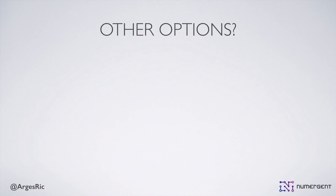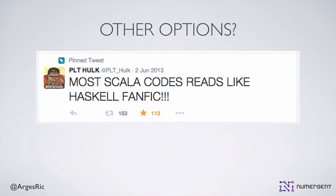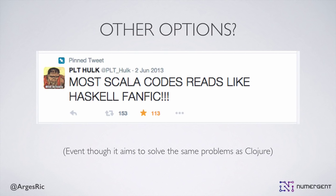There were other options on the Java platform, particularly Scala. I really couldn't get into it. The weird mixture of object orientation with functional programming, plus this massive syntax, gave me the impression that the language didn't know what it wanted to be. Clojure had such a clean, straightforward syntax that compared to Scala it was a complete breath of fresh air. Even though Scala is trying to solve some of the same problems as Clojure, it didn't click with me at the time.